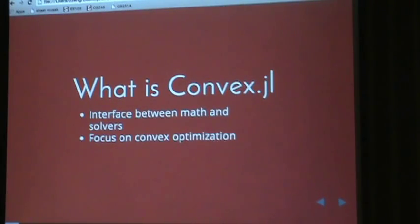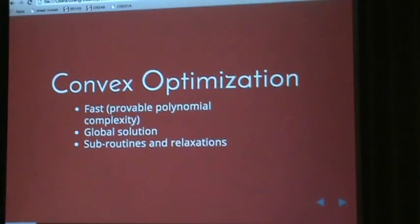And Convex.jl has a big focus on convex optimization, which is a subclass of general optimization problems. So why is convex optimization so cool? It's pretty fast. You can solve problems in provably polynomial time, and you can get global maxima and minima as a result of how everything kind of works out in the math.